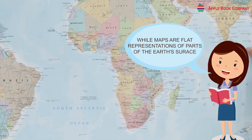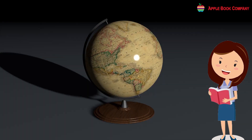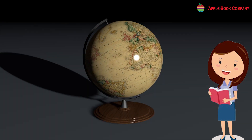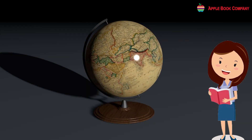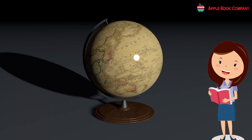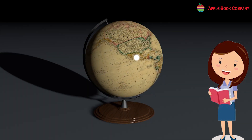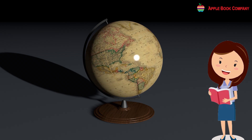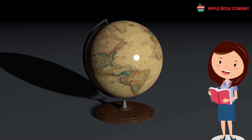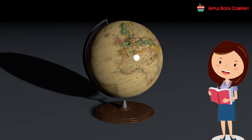Have you ever seen a globe, children? In which shape does it look? Round — like a sphere. Wonderful!